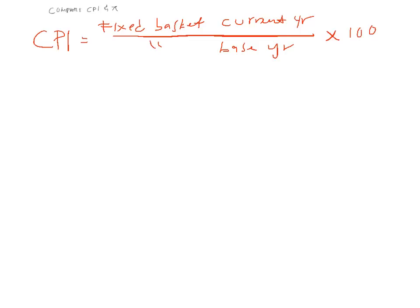Let's look at the formula for the CPI. When we're looking at the CPI, we're going to look at the fixed basket for the current year, divide it with the fixed basket of the base year, and multiply that by 100. That's for your CPI.